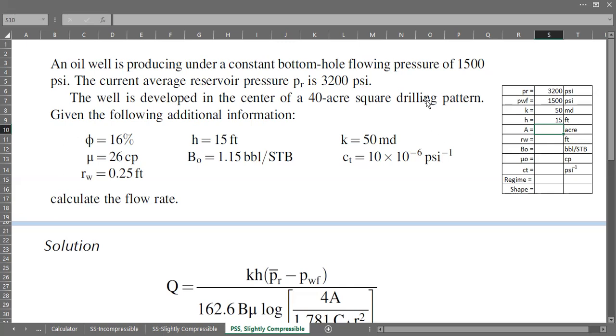And the area, drainage area or you can also call it drilling pattern, the area is 40 acres and the well radius is 0.25 feet. Oil formation volume factor 1.15, oil viscosity 26, it's quite high. I think it should be 2.6 in this case, not too high, not 26.